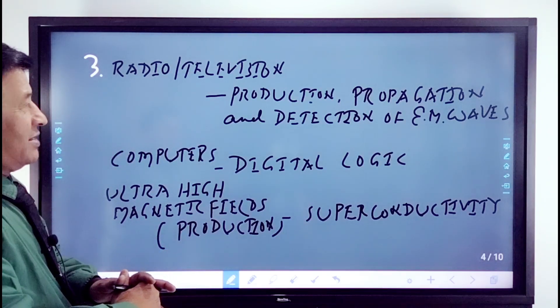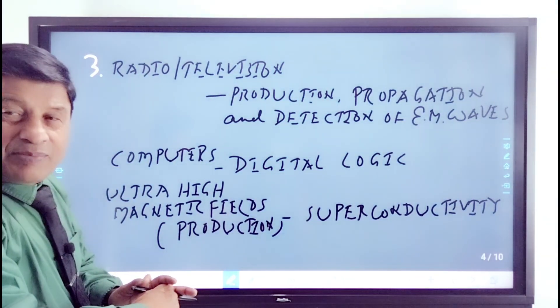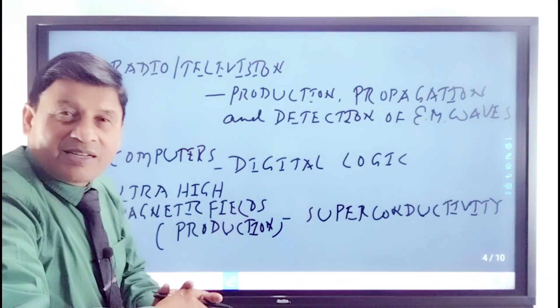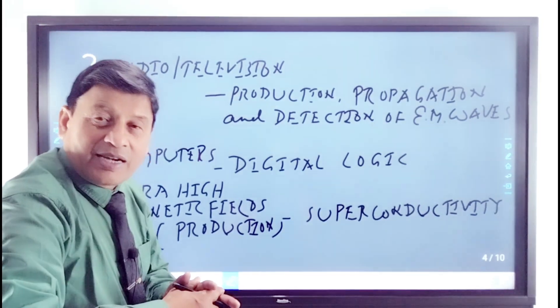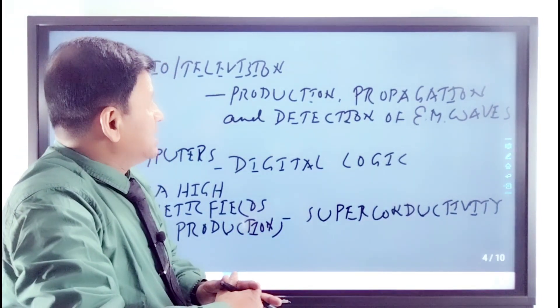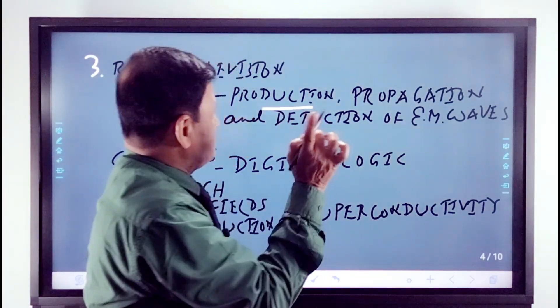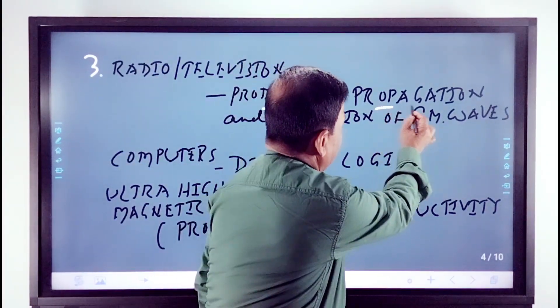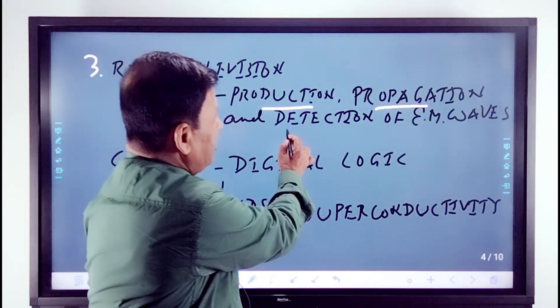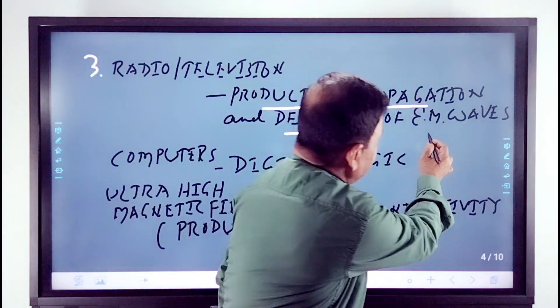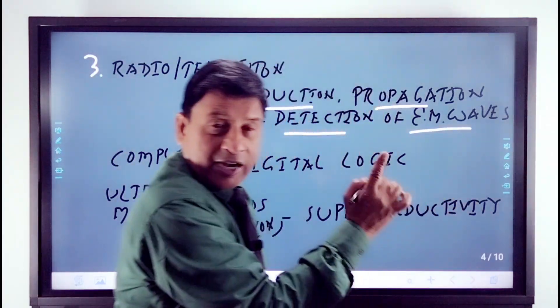Now come to the principle involved: radio or television. Which principle involved? So this radio and television, what principles are? Production, propagation and detection of EM waves. EM wave means electromagnetic waves.